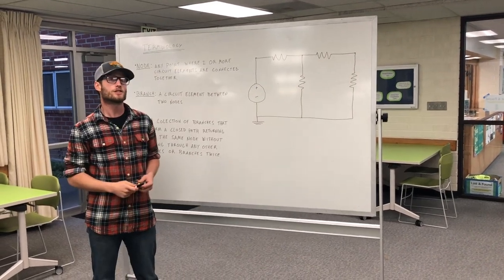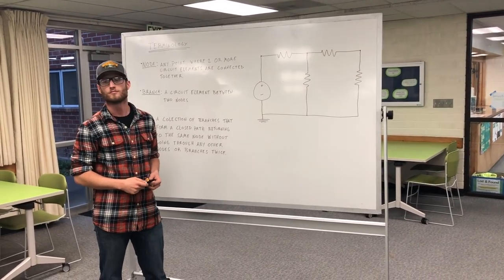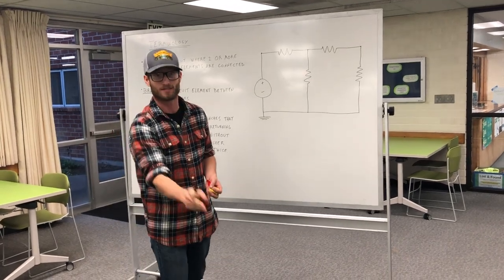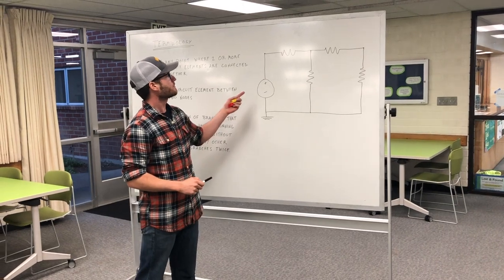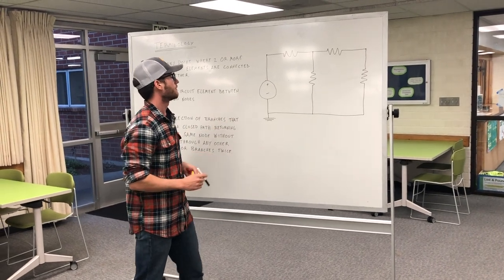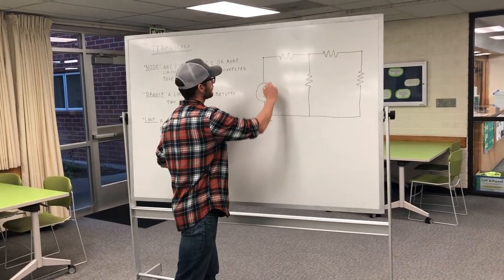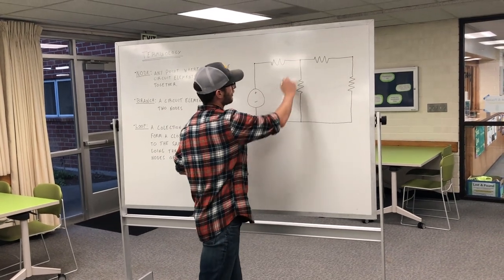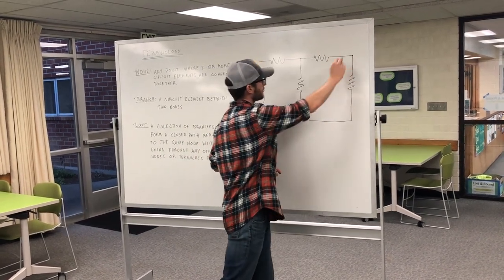Can anyone tell me how many branches are in this example? There are three branches in this example. We can see one connected here between these two nodes, one here between these two nodes, and one here between these two nodes.